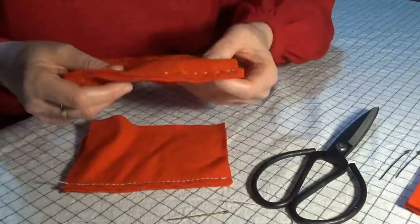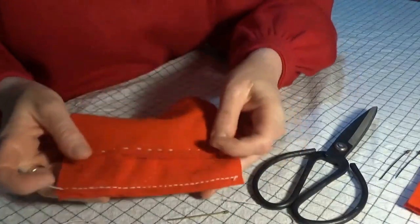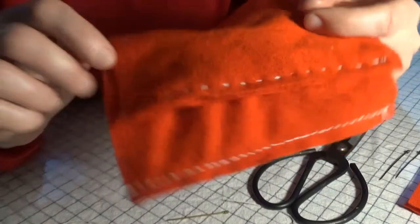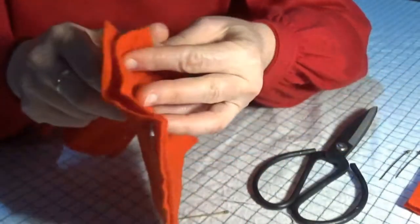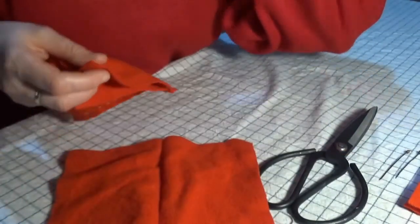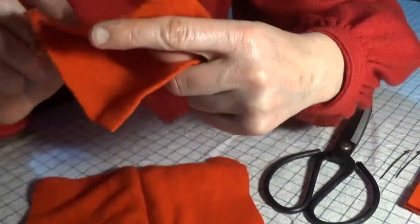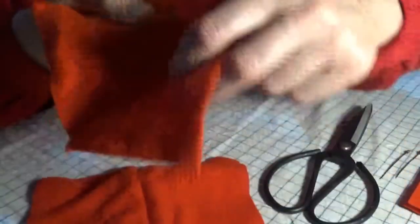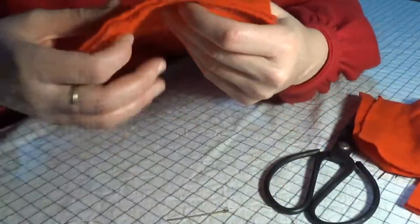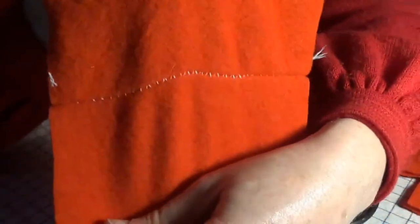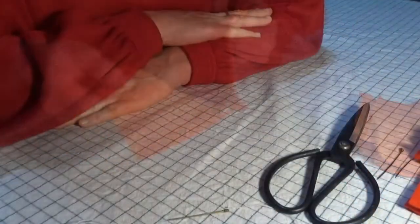The back stitch seam will also not unravel or pucker as easily as the running stitch seam. Here's the running stitch sample. You can see that it gapes quite a lot compared to the back stitch. You can see that they perform quite differently under pressure.